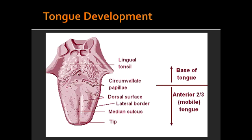What forms the anterior two-thirds of the tongue? The anterior two-thirds of the tongue is formed by the first branchial arch. What nerve provides sensation to the anterior two-thirds of the tongue? Sensation to the anterior two-thirds is provided by the mandibular nerve, which is cranial nerve V3.